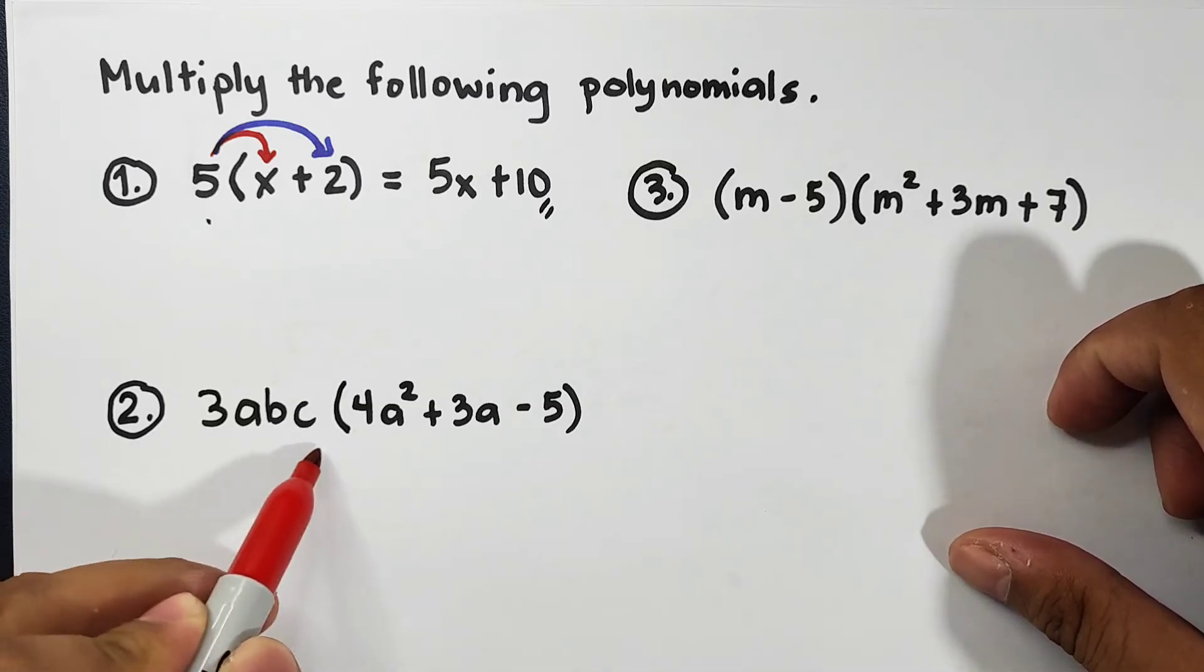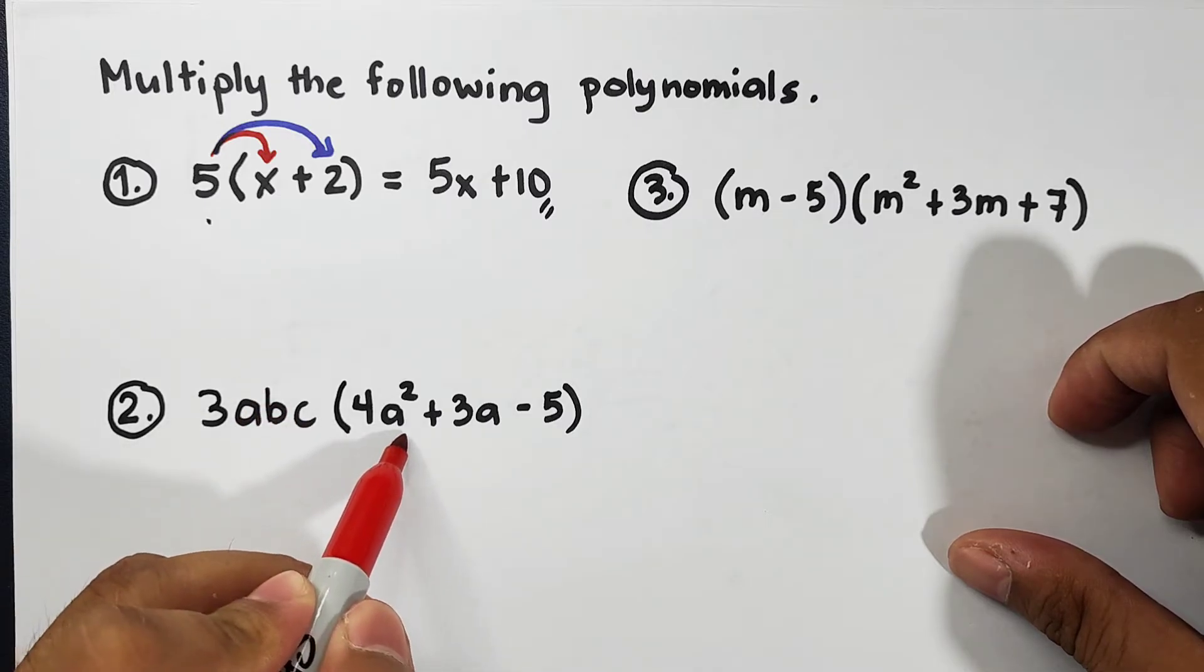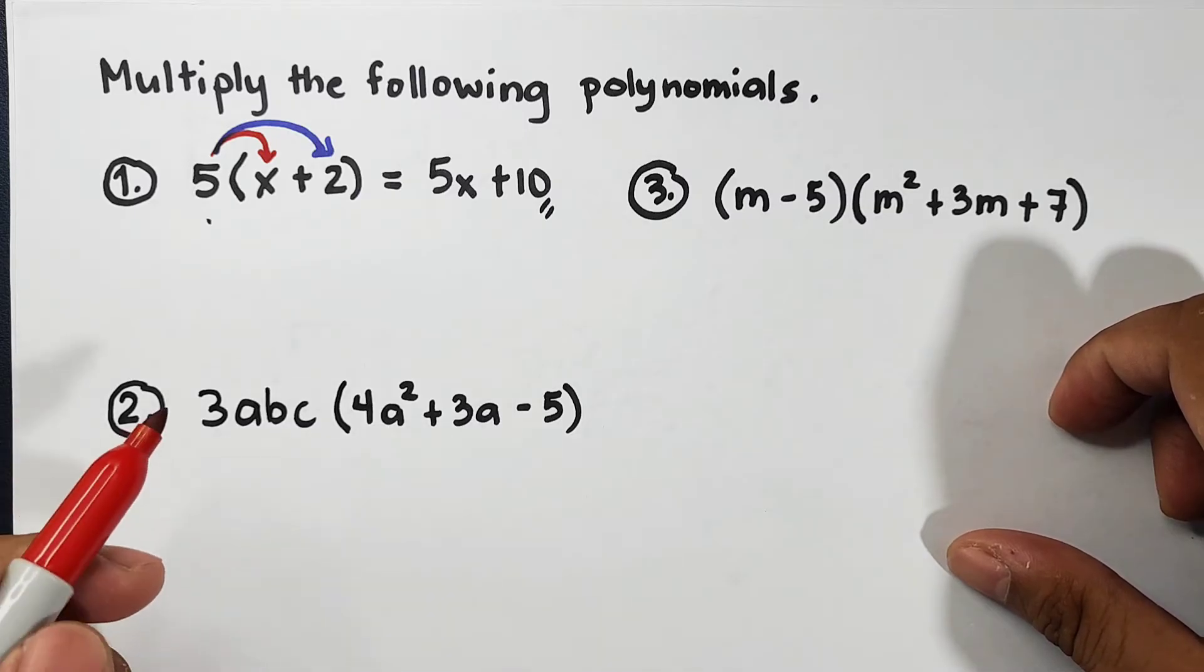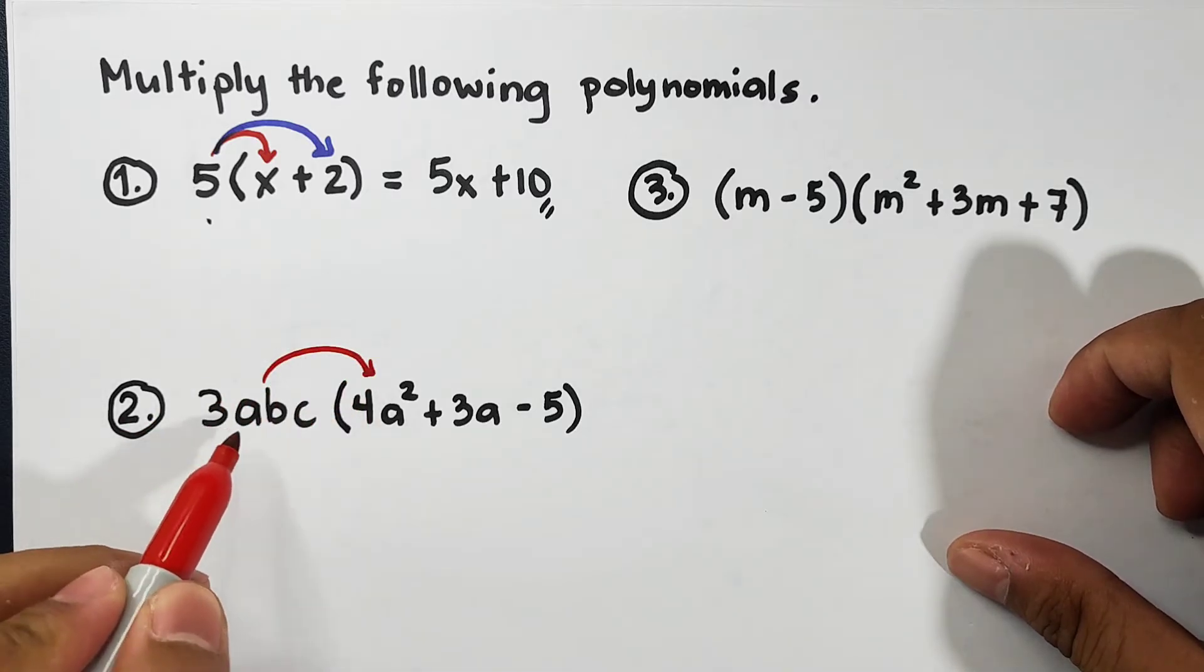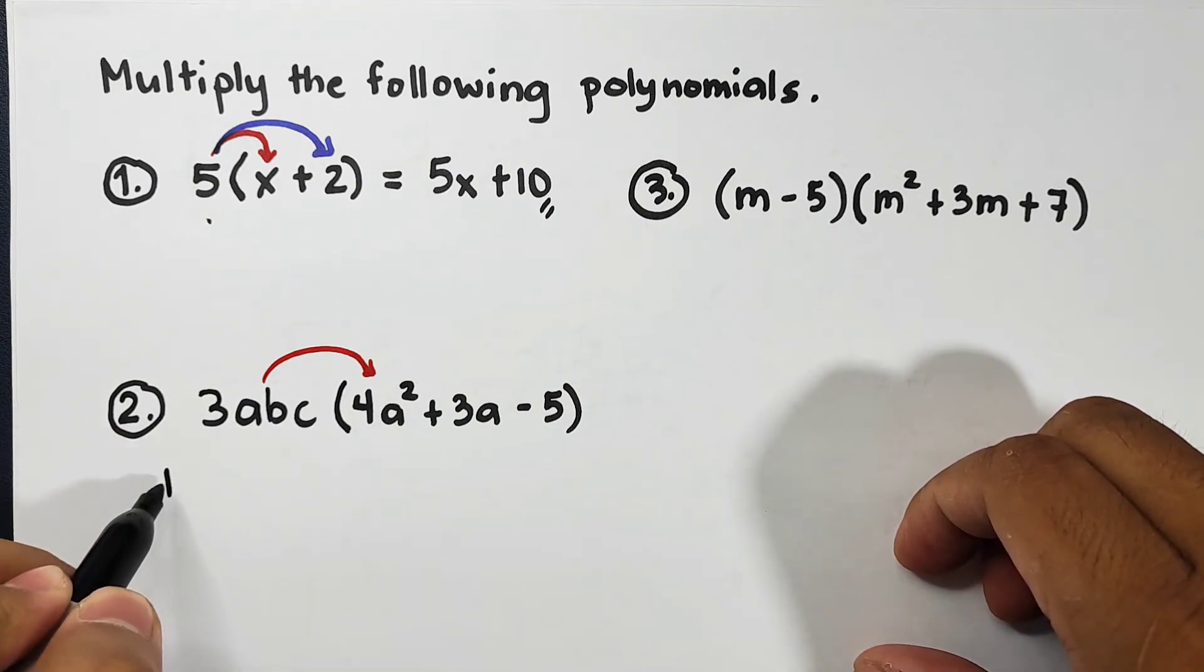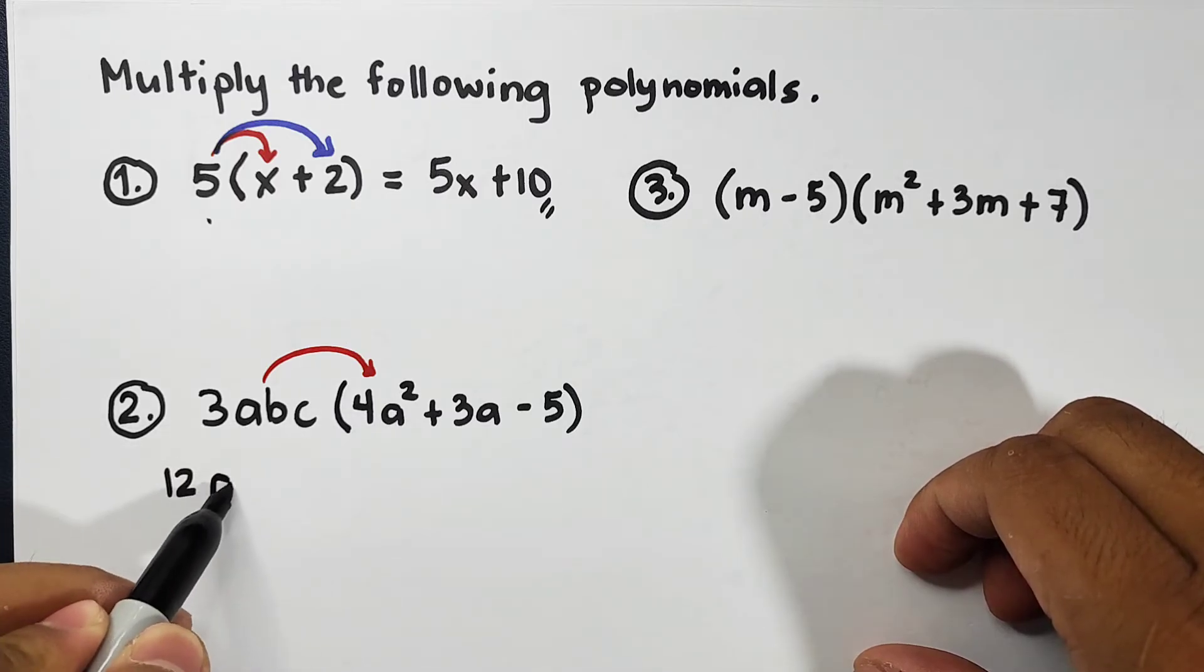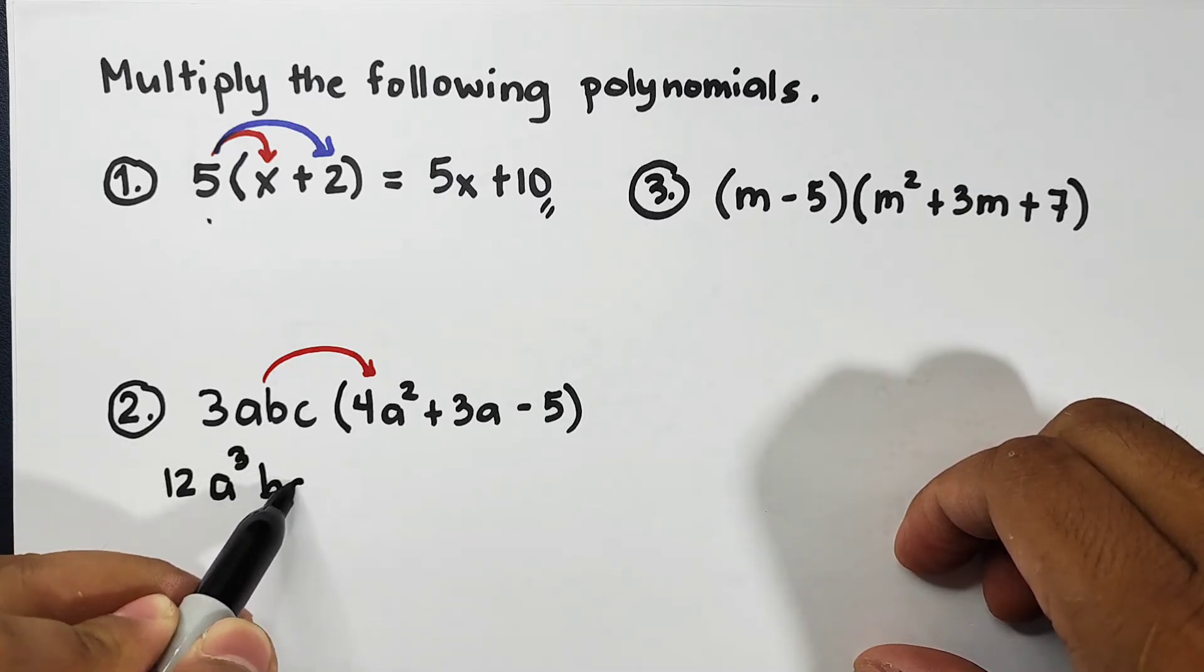How are we going to multiply this kind of expression? The expression outside is 3abc. Now we will multiply this from the terms inside, which is 4a² plus 3a minus 5. So 3abc times 4a². First I will multiply the coefficients: 3 times 4, which is equal to 12. And then since they have a common a, a times a² is a³. Then we will copy b and c.